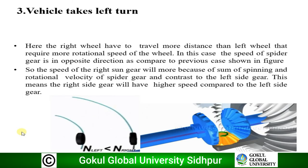Case 3: when the vehicle takes a left turn. The right wheel has to travel more distance than the left wheel. While taking a left turn, the left wheel is the inner wheel covering less distance, and the right wheel is the outer wheel covering more distance. So RPM required on the left side is less compared to RPM required on the right side. The speed of the spider gear is in the opposite direction compared to the previous case.